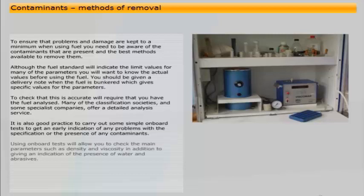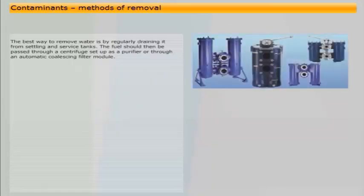Using onboard tests will allow you to check the main parameters such as density and viscosity, in addition to giving an indication of the presence of water and abrasives. The best way to remove water is by regularly draining it from settling and service tanks. The fuel should then be passed through a centrifuge set up as a purifier, or through an automatic coalescing filter module.